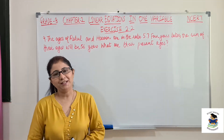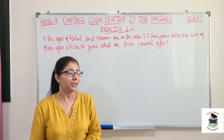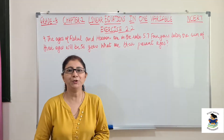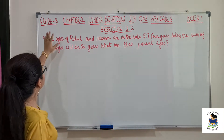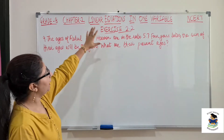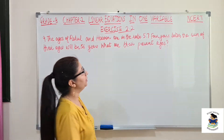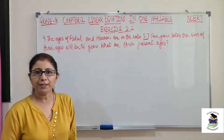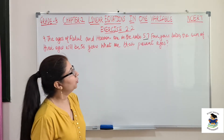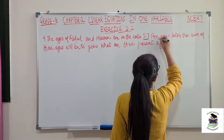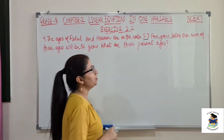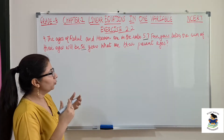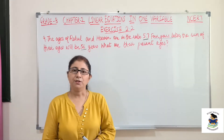Hello everyone, welcome back to my channel NCRT Maths with Bardeen. Today we are going to solve question number 9 of exercise 2.2. The ages of Rahul and Haroon are in the ratio 5 is to 7. Four years later, the sum of their ages will be 56 years. So what are their present ages?